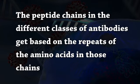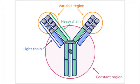The peptide chains in different classes of antibodies are based on repeats of amino acids in those chains. In different zones of the repeats in the amino acids, the chains are also connected by disulfide bonds. The anterior part of the FAB region is called the variable (V) region. As the name suggests, the amino acid sequence in that variable region varies from cell to cell.